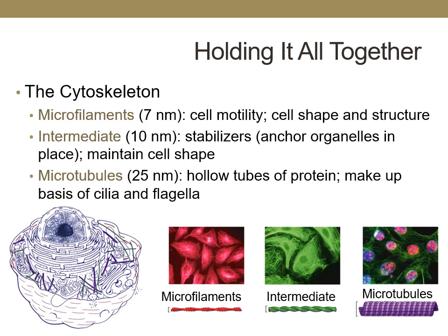Both prokaryotic and eukaryotic cells have a cytoskeleton, but the cytoskeleton of eukaryotic cells is much more complex. There are several types of fibers of different sizes involved. Microfilaments are the smallest in diameter and function in cell motility, maintenance of cell shape, and maintaining the structure of the cell. Intermediate filaments are mostly involved in stabilizing or anchoring organelles in place, and also play a role in maintaining cell shape. Microtubules are the largest in diameter — hollow tubes of protein that make up the internal structures of cilia and flagella, structures that are in constant motion and must be strong enough to withstand repeated movement.